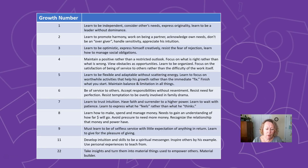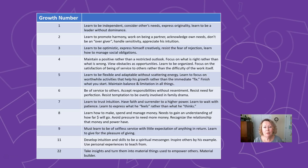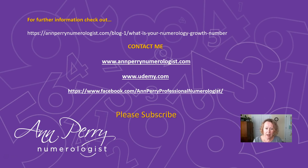Those with the twenty-two growth number take insights and turn them into material things. These are the master builders, intended to create something step by step that will empower, inspire, and benefit mankind. The two twos within the twenty-two say you don't have to do this alone — you must employ others and work collaboratively in partnership to get the job done.